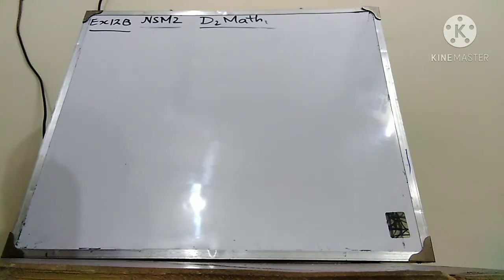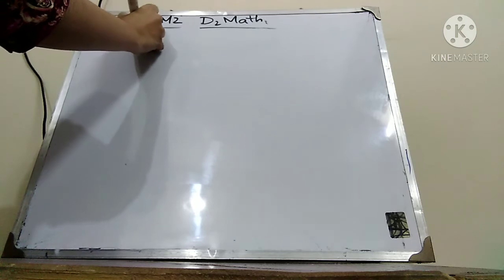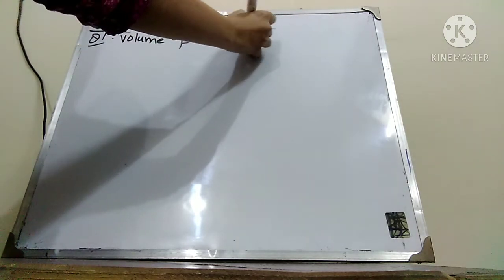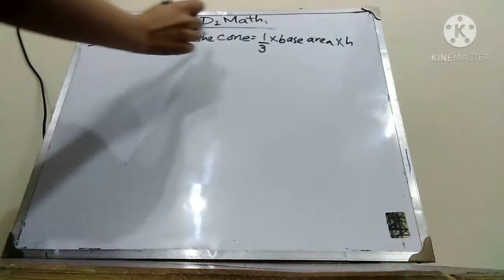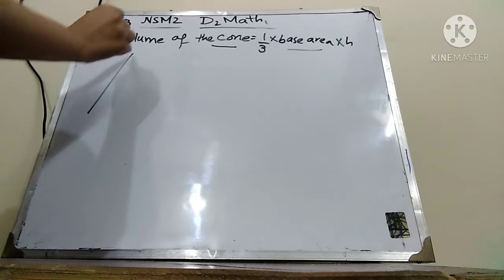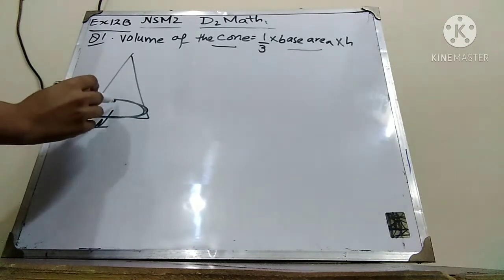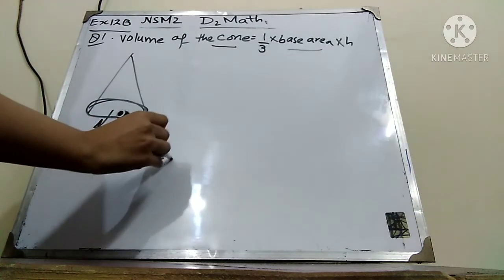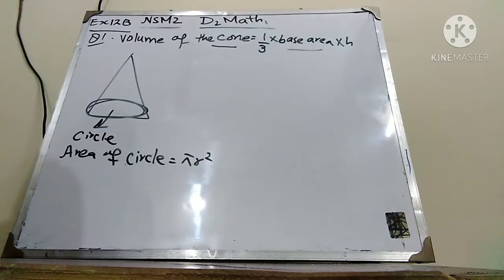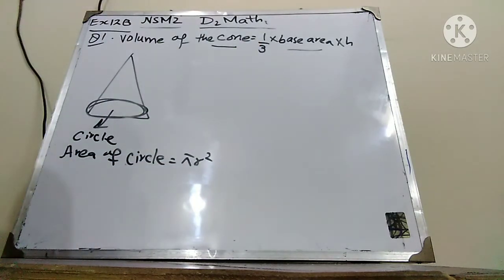So now question number one is: find the volume of each of the following cones. Remember that the formula for volume of a cone is: volume of cone = 1/3 × base area × height. In a cone, the base area is a circle, so the base area formula is pi r square.